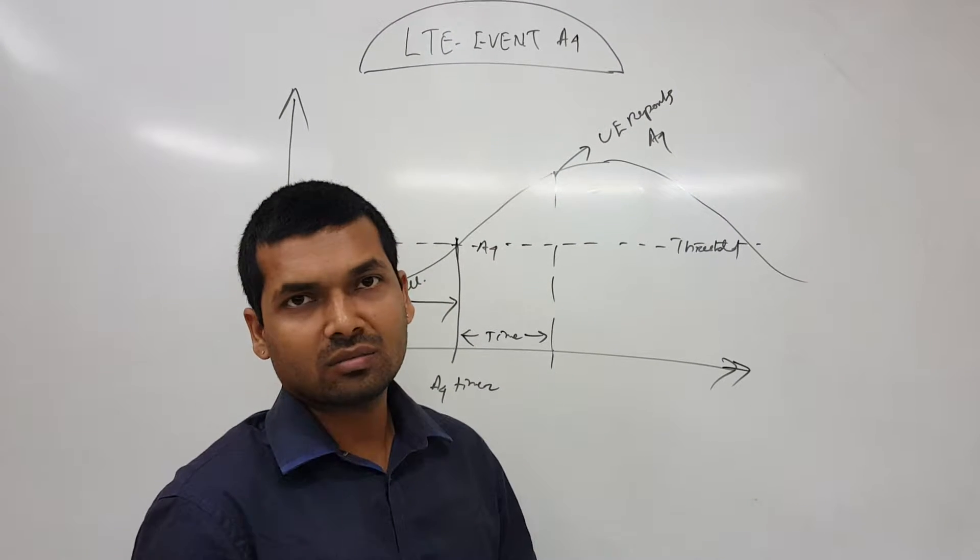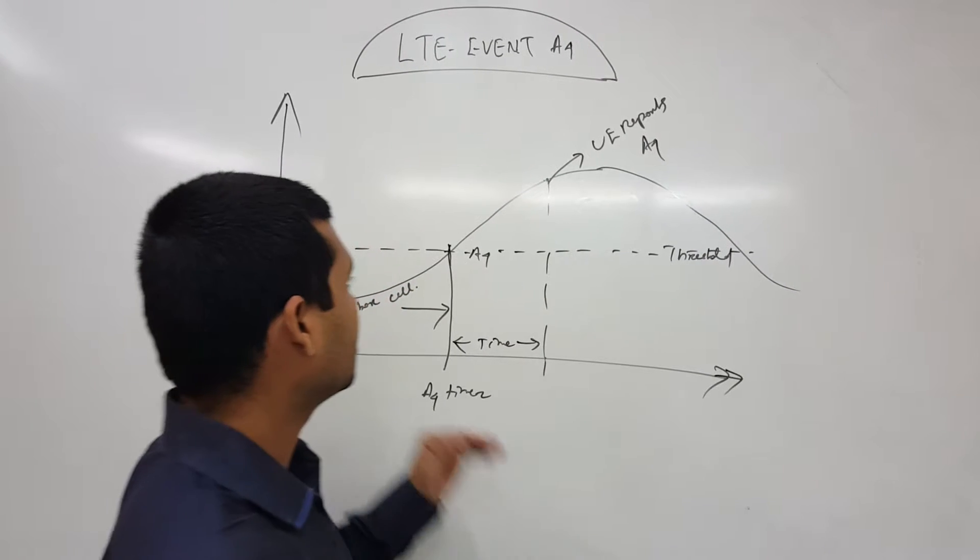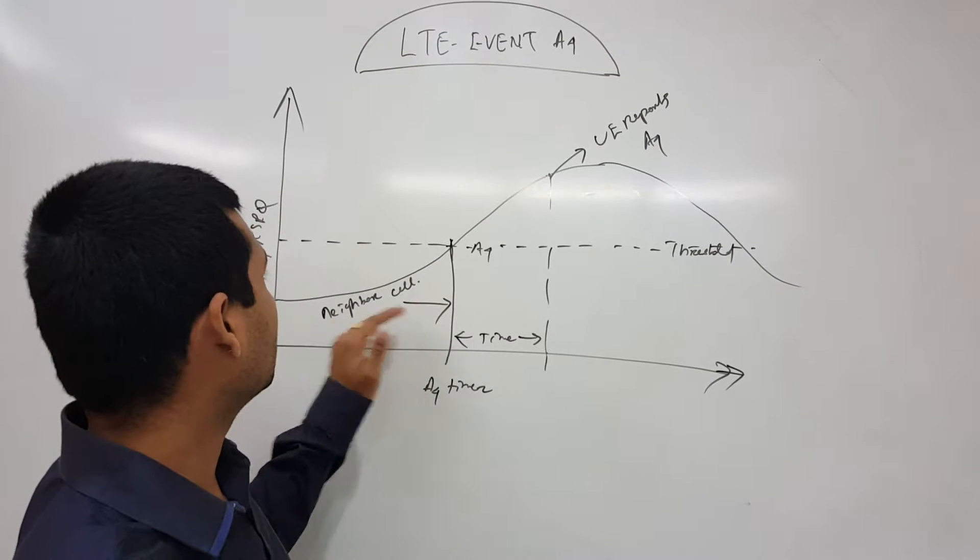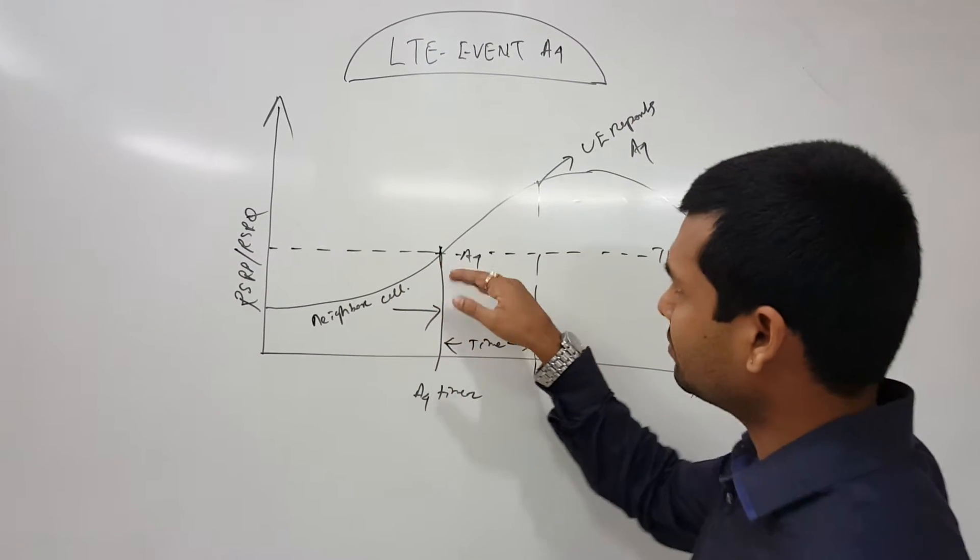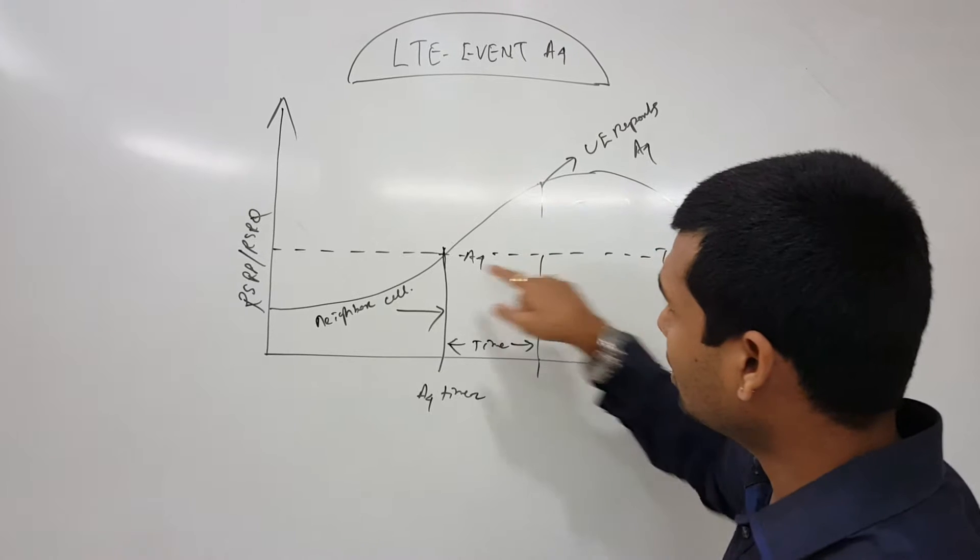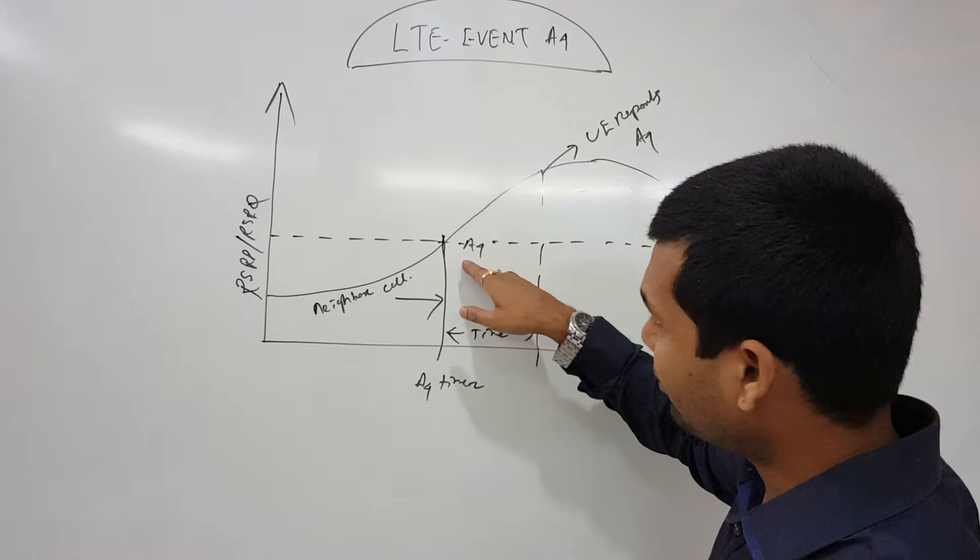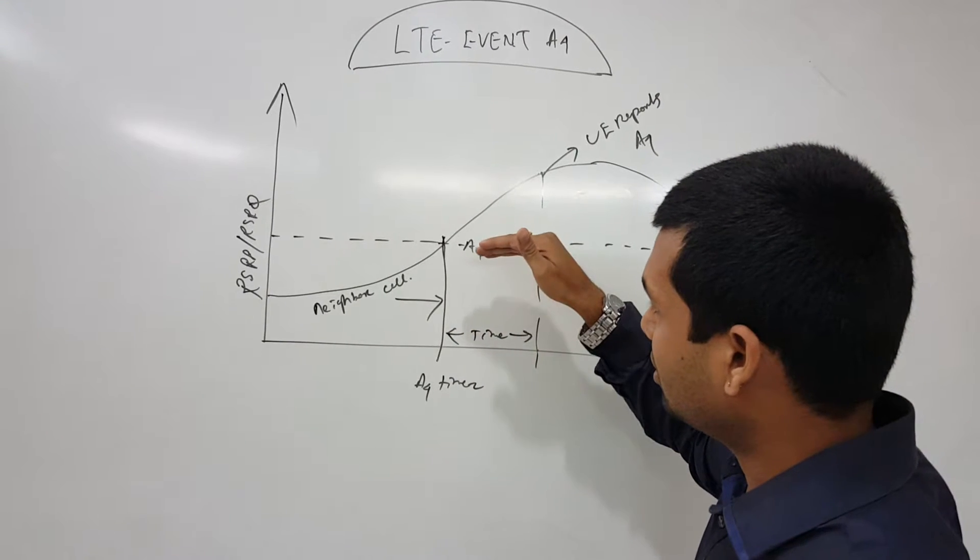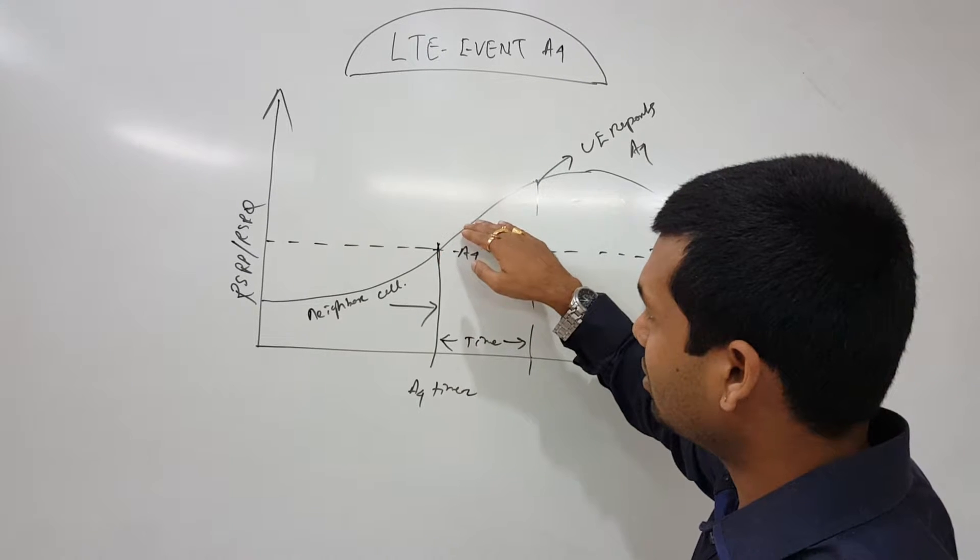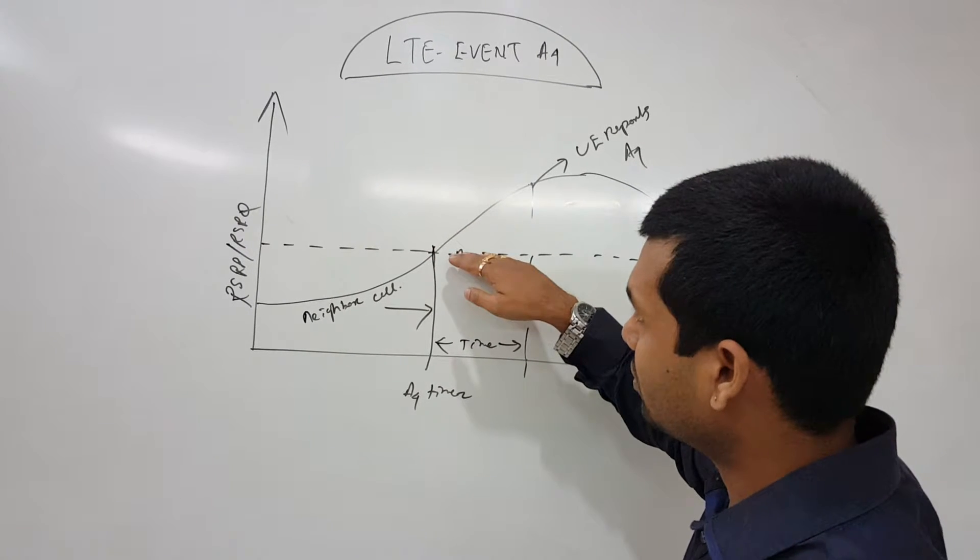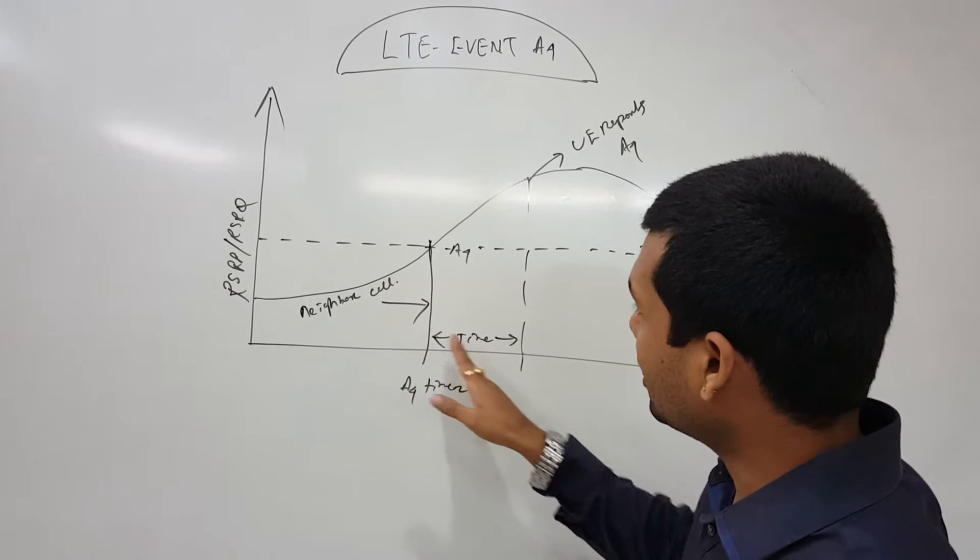In A4, neighbor is better than a certain threshold. Let's say this is the neighbor cell RSRP/RSRQ reporting, and it's becoming—this is the offset. When it is at this point, the A4 timer starts. The neighbor cell is becoming better. This is the threshold for the better reporting, so when it continues...